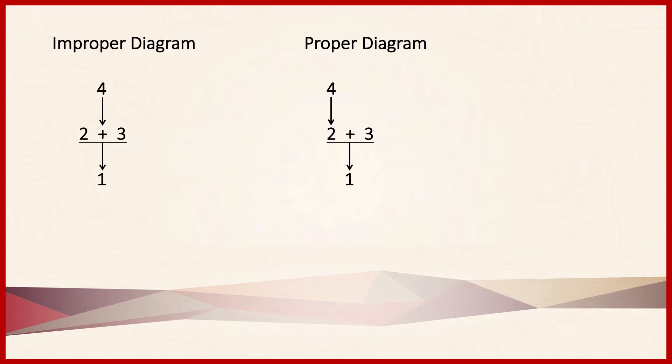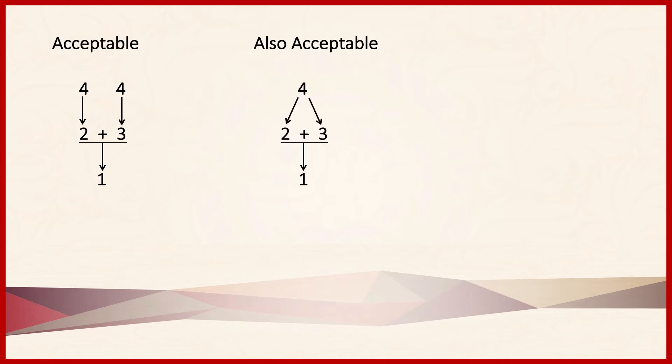The reason students do this is because they see that there are sometimes propositions, like Proposition 4, that support more than one proposition. For example, Proposition 4 might support both Propositions 2 and 3. There are two ways to represent this: you can write the number 4 twice with an arrow from each to the propositions it supports, or write 4 once with arrows leading to each of the other propositions.